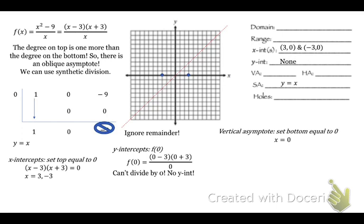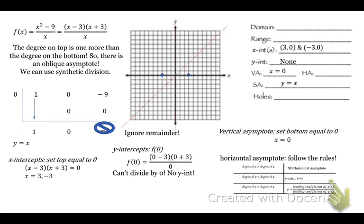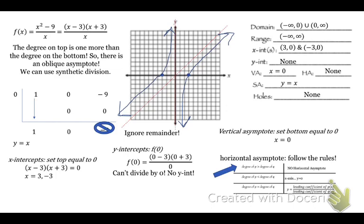Vertical asymptote: set the bottom equal to 0, so x equals 0. Horizontal asymptote: the degree on top is greater than the degree on bottom, and we have a slant asymptote, so there is no horizontal asymptote. There are also no holes. We can graph this — it goes along the slant asymptote, kitty-corner, in the top-left quadrant and bottom-right quadrant. Domain: negative infinity to 0, union 0 to infinity. Range: negative infinity to positive infinity, since there's no horizontal asymptote.